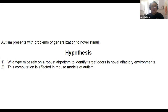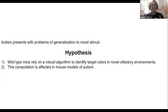Our hypothesis is that there is a fundamental computation that is affected in autism, and we want to determine if this computation is also affected in mouse models of autism using olfaction. Specifically, that wild-type neurotypical mice rely on a robust algorithm to identify target odors in novel olfactory environments, and that this computation is impaired in the autism mouse model.